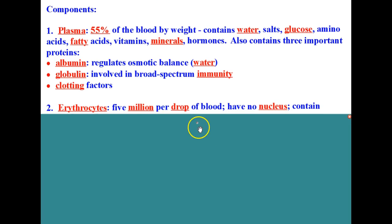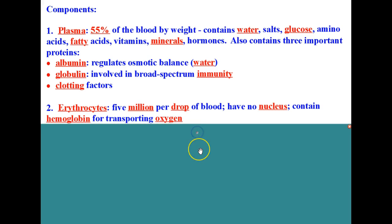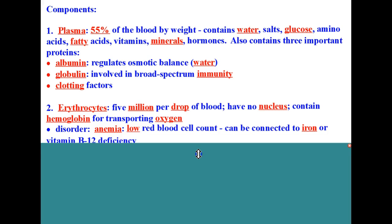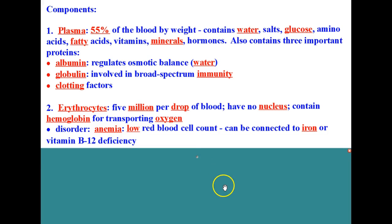Number two are the erythrocytes, which is the fancy name for your red blood cells. You have about five million red blood cells per drop of blood. Red blood cells have no nucleus and contain hemoglobin for transporting oxygen. A disorder of the erythrocytes is called anemia, which is a low red blood cell count and can be connected to either iron or vitamin B12 deficiency.